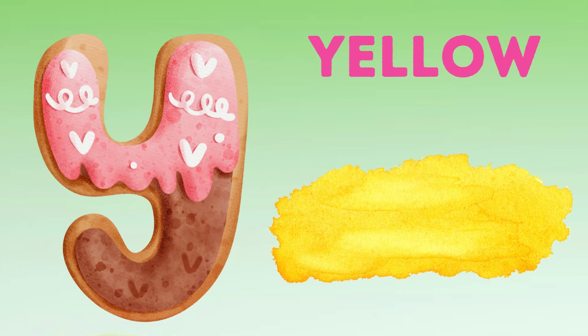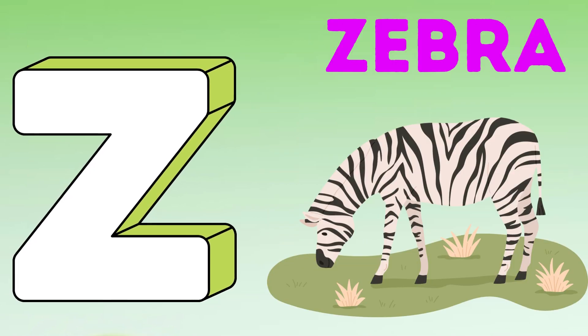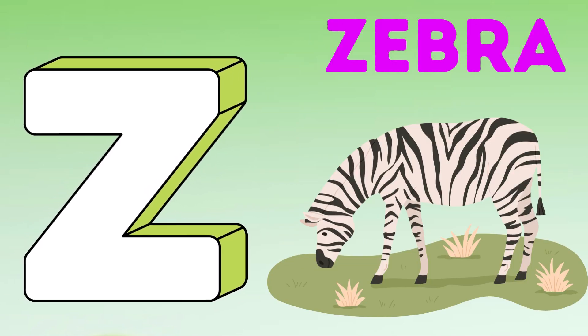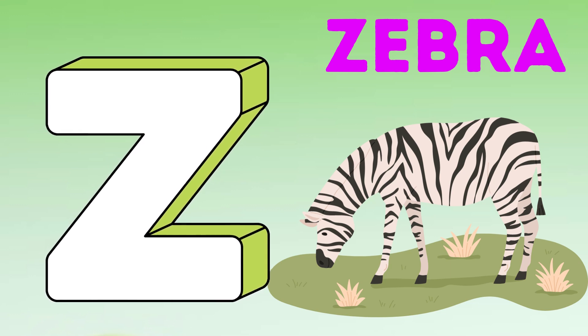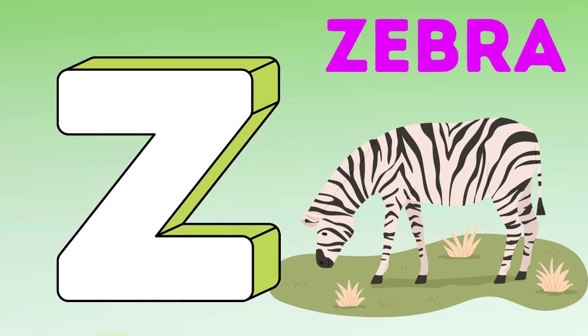Y is for yellow, ye-ye-yellow. Z is for zebra, z-z-zebra.